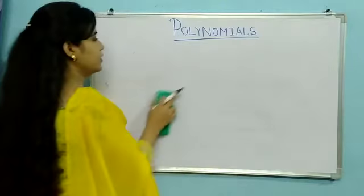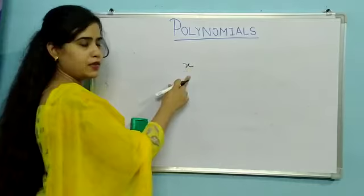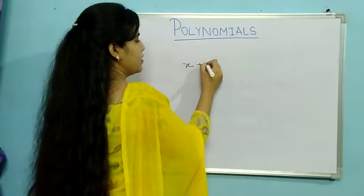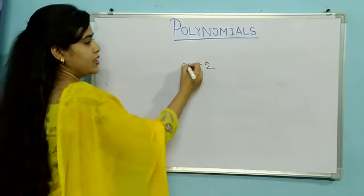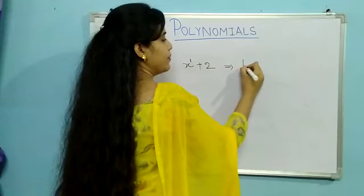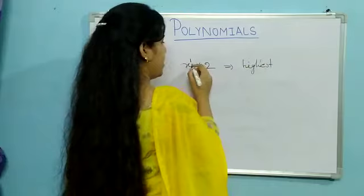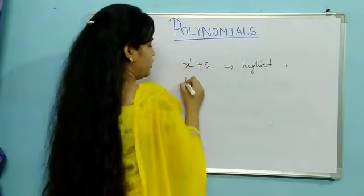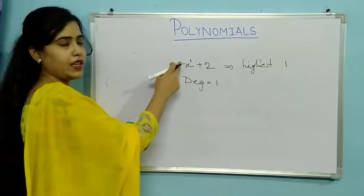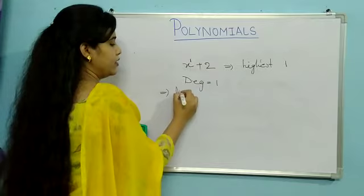So when we have a single-term polynomial — for example, a polynomial with x plus something where the degree of x is 1 — the highest degree is 1. So the degree of this polynomial is 1. Whenever we have any polynomial of degree 1, we call it a linear polynomial.